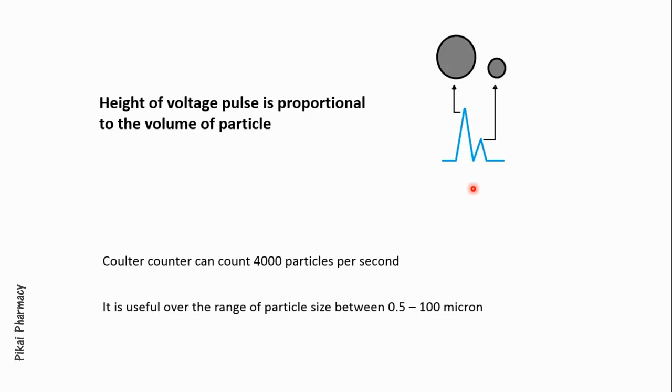The Coulter counter can count 4000 particles per second, and it is useful over the range of particle size between 0.5 micron to 100 micron.